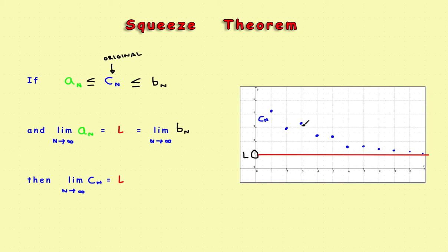To show algebraically that it converges, we use the squeeze theorem. If you can find a green sequence — an A sequence — that stays below the blue sequence, and a black B sequence that stays above it, and both of those sequences approach the same fixed number L, then since your sequence is trapped in between, it must also approach L.